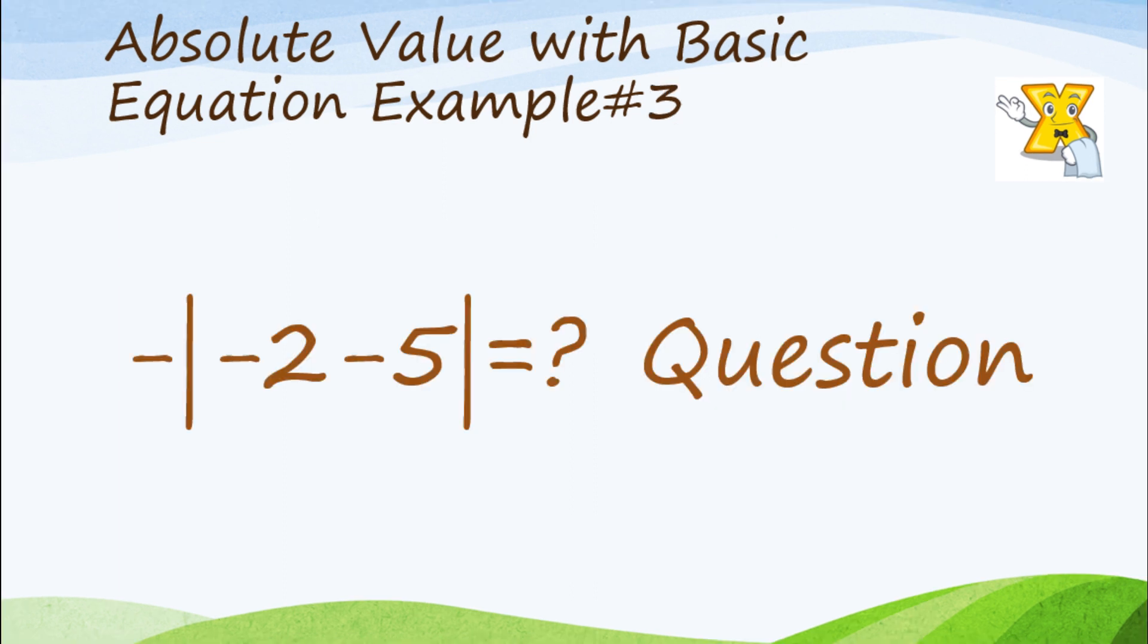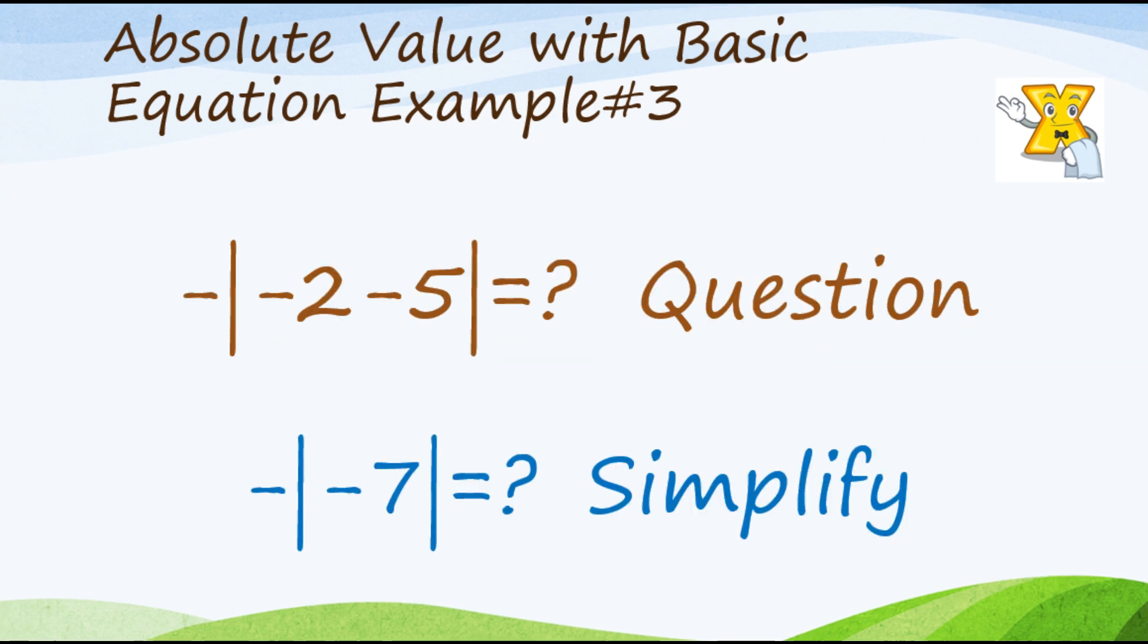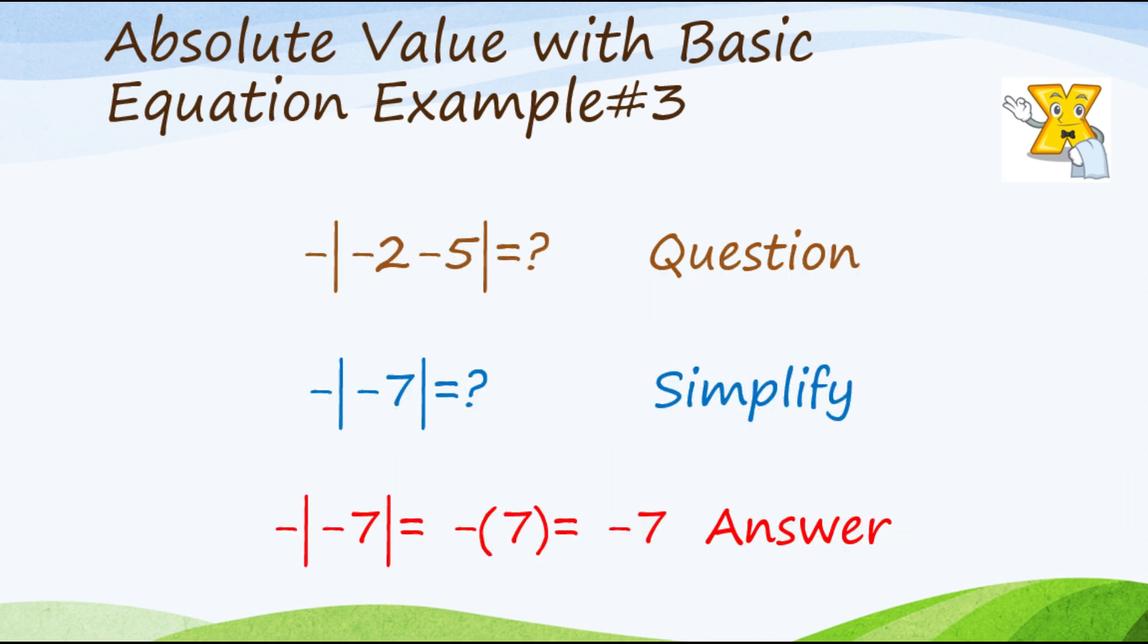Next example tayo. Paano naman kung negative tapos yung absolute value ng negative 2 minus 5? So pag ganyan, as usual, simplify muna natin yung nasa loob. Negative 2 minus 5, that will be negative 7. Tapos napin natin yung absolute value ng negative 7 which is 7. Tapos dun mo lang ipapasok yung negative. Kaya ang sagot natin ay negative 7.